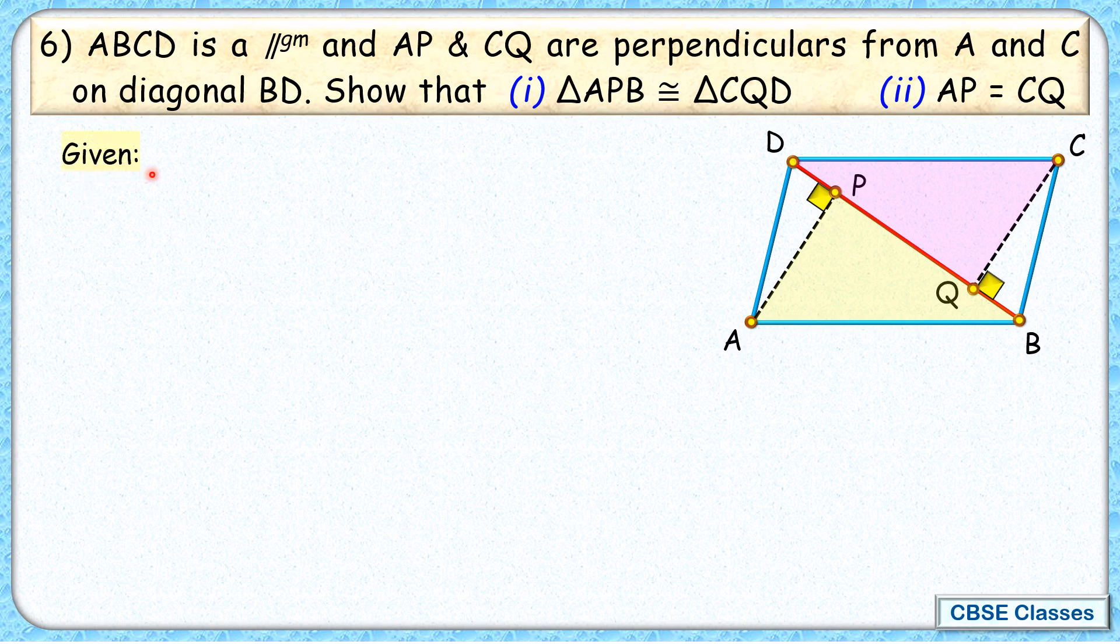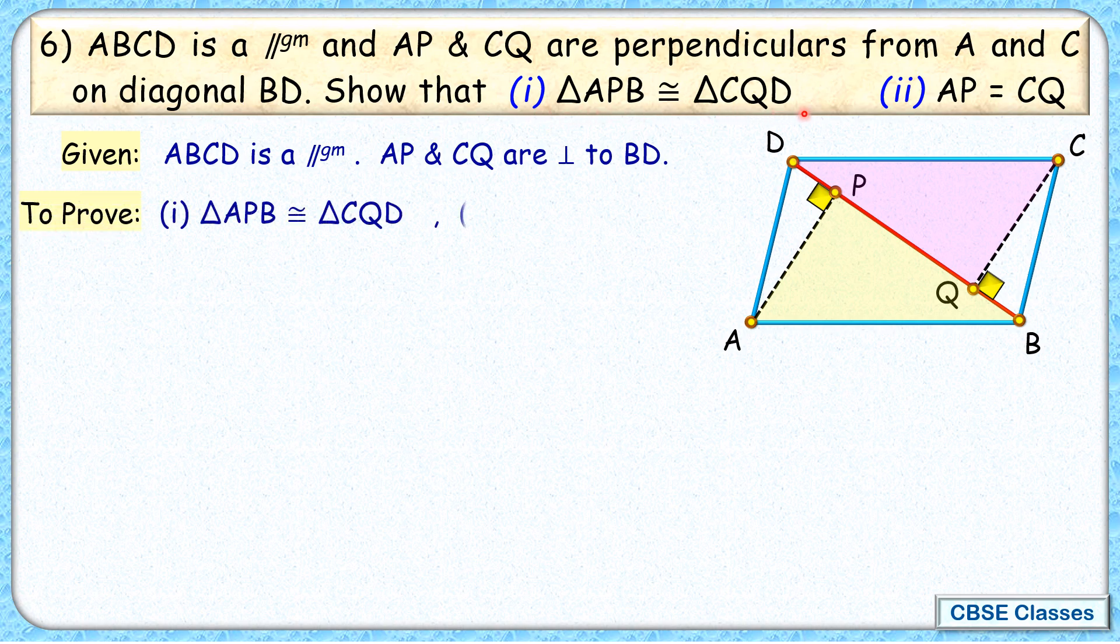Of course, we will start with given. What's given to us is ABCD is a parallelogram, and AP and CQ are perpendicular to BD. And what we have to prove: we have to prove that these two triangles are congruent and AP length and CQ length are equal.